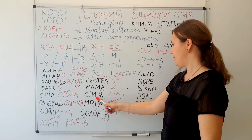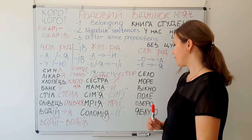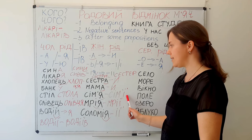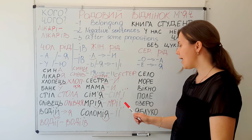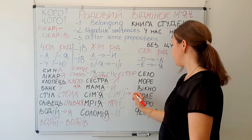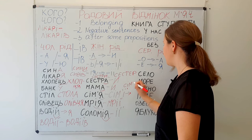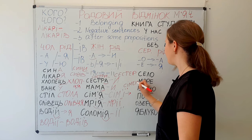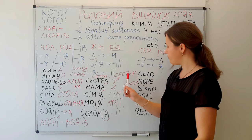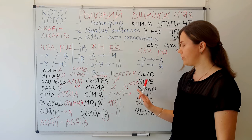One more example: сім'я — 'one family.' The plural nominative is сім'ї. And in the genitive case plural we will have сімей. Again, we will make a separate lesson for the genitive case because there are so many rules and exceptions, but today is just general information.